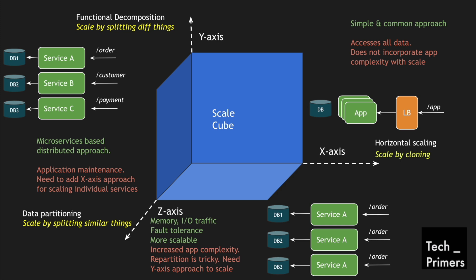The next approach is functional decomposition — scaling by splitting an application into different things, basically different functionalities or domains. Here we have multiple services A, B, and C corresponding to order, customer, and payment, each with its own database. Compared to the x-axis, this is much more scalable in a distributed sense because traffic is split into individual functions. Even if one function goes down the others are not impacted. However, without x-axis scaling you cannot individually scale these services, so a mix of y-axis and x-axis makes it much more scalable.